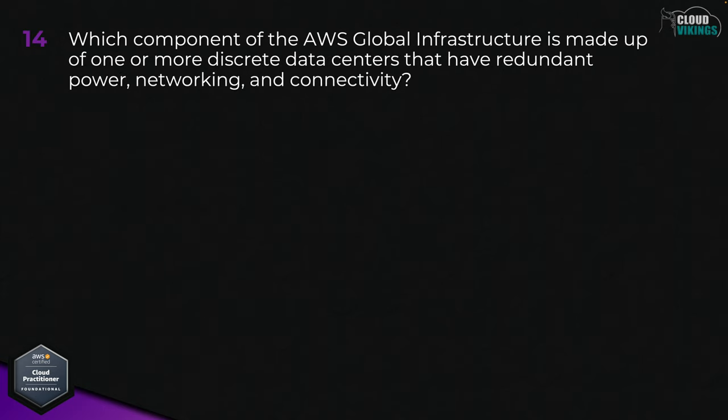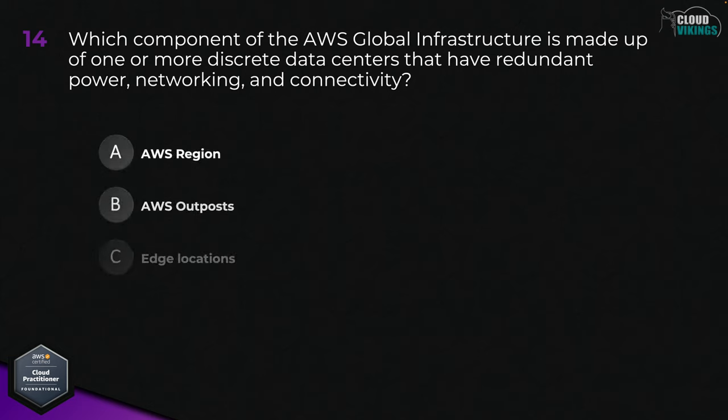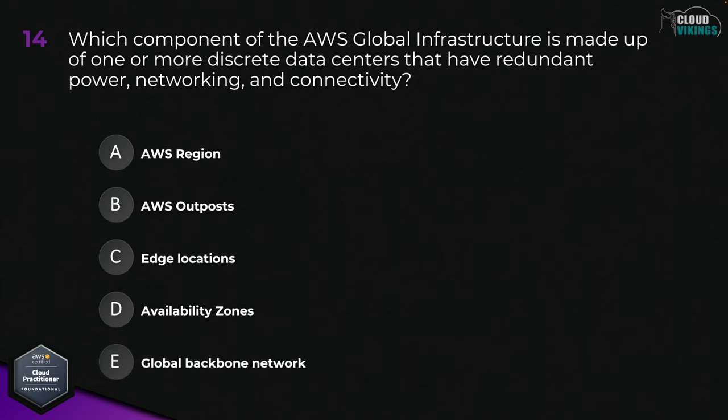Question fourteen: which component of the AWS global infrastructure is made up of one or more discrete data centers that have redundant power, networking, and connectivity? Options are: A, AWS Region; B, AWS Outposts; C, edge locations; D, availability zones; or E, global backbone network. The answer is D, availability zones.